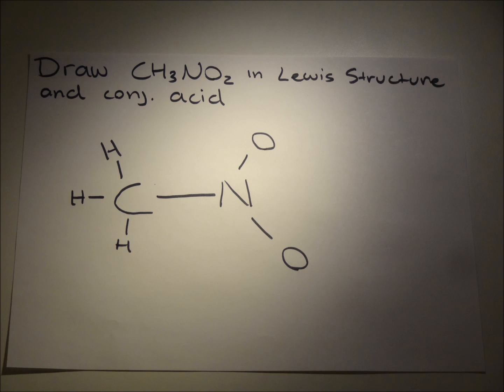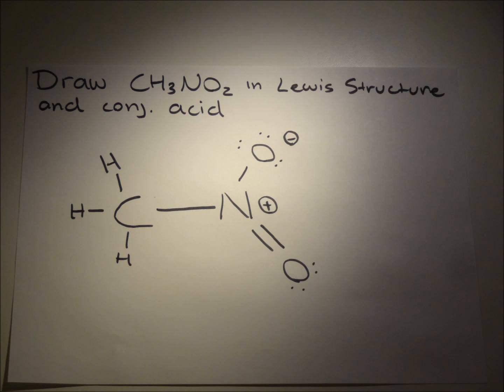The oxygens need two bonds. One oxygen at the bottom will have a double bond with the nitrogen, and this will cause the nitrogen to become positively charged. The oxygen on the top will not be able to find another bond, so it will become negatively charged. And here is your Lewis structure for nitromethane.